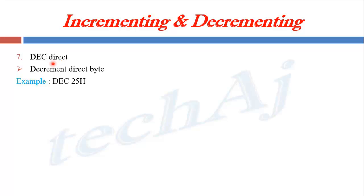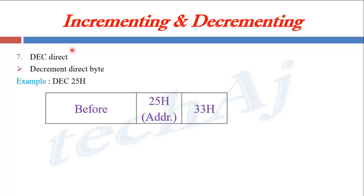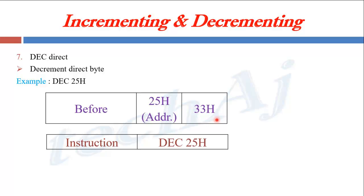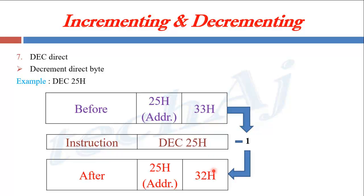DEC direct — here direct is a RAM memory address. If RAM memory address 25H initially holds the value 33H, after executing DEC 25H the value at that RAM memory address will be decremented by 1 and it will become 32H.